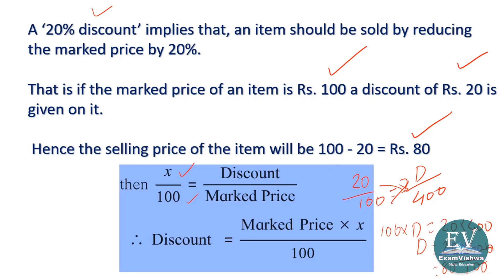That is how we have done it before. Understood? So that way we can calculate the discount on items. Discount is always given in percentage.